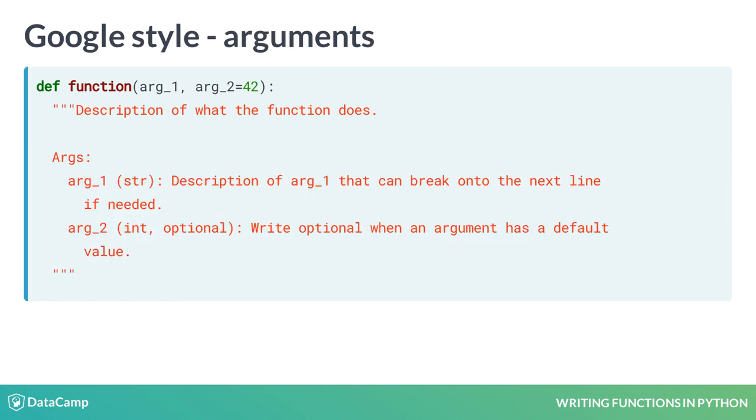Next comes the args section, where you list each argument name, followed by its expected type in parentheses, and then what its role is in the function. If you need extra space, you can break to the next line and indent. If an argument has a default value, mark it as optional when describing the type. If the function does not take any parameters, feel free to leave this section out.